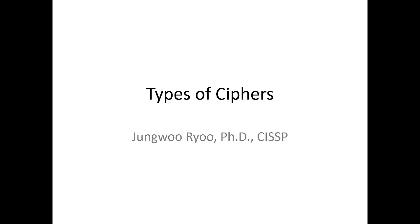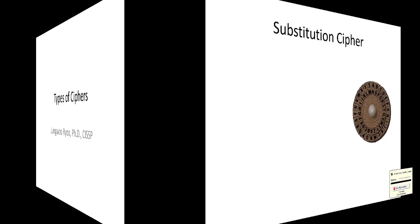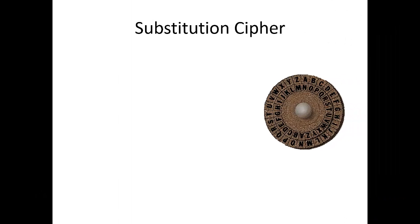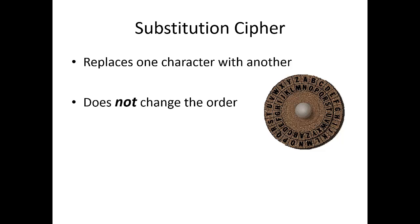Now let's talk about types of ciphers. We can start with substitution cipher, which replaces one character with another in a plain text. This cipher does not change the order of the letters in the text.